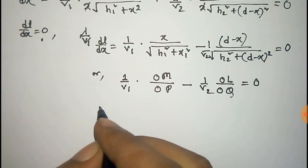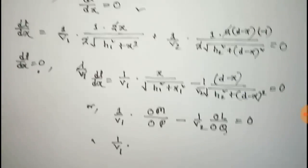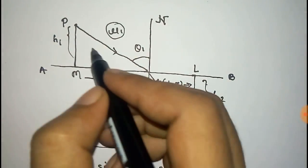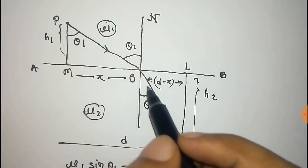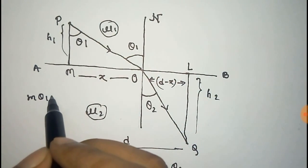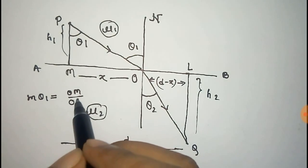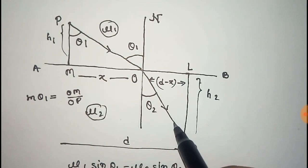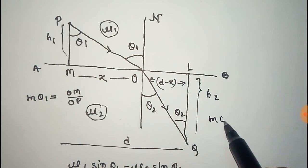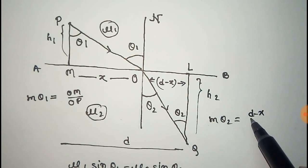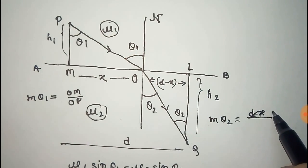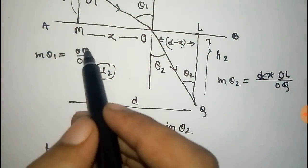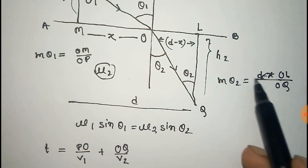Now you can see that OM by OP can be written as sin theta1, because if this angle is theta1 then this also will be theta1, and from this sin theta1 is equal to OM by OP. And if this angle is theta2 then this will also be theta2, so sin theta2 is equal to OL by OQ. Now we have to put this condition into our main equation, substituting sin theta1 and sin theta2.